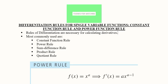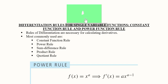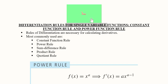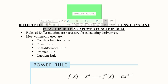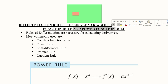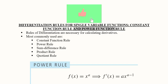We will learn the first two rules of differentiation. These rules are for single-variable functions, where there is only one independent variable affecting the dependent variable. The two rules we will study are the constant function rule and the power function rule.